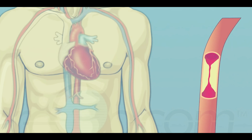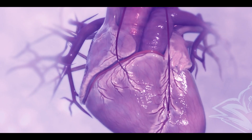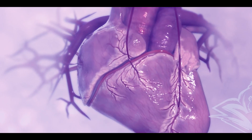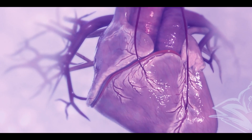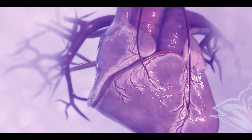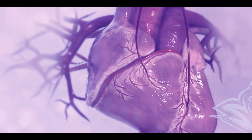After that, your doctor attaches one end of the graft above the blockage and the other end below the blockage. This redirects the blood flow around the blockage by going through the new graft to reach the heart muscle.